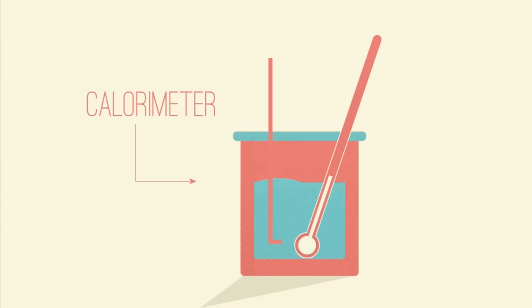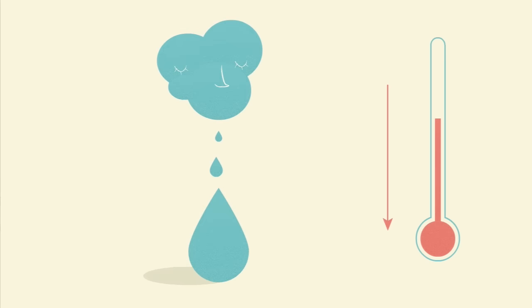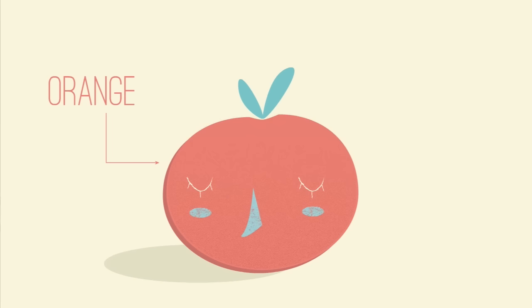A calorimeter is a device used for calorimetry, the process of measuring the change in heat of chemical reactions, or physical changes, as well as heat capacity for a material.